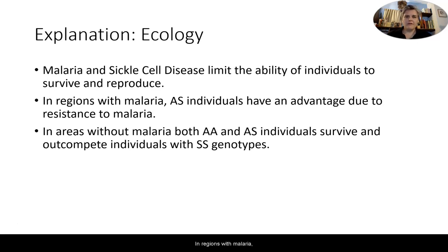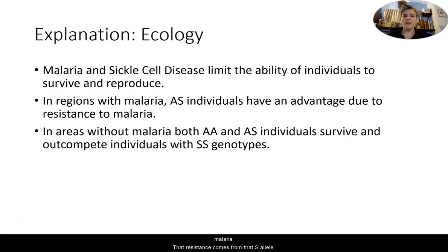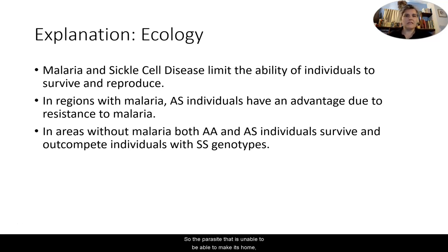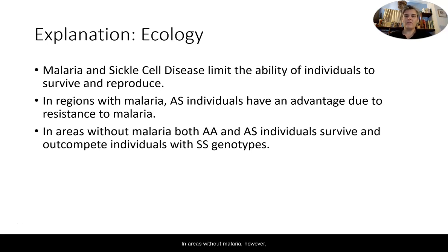In regions with malaria, individuals who have the AS genotype have an advantage due to their resistance to malaria. That resistance comes from the S allele. The reason is that the parasite needs to be able to rearrange the material inside the blood cell, and the S allele — that particular gene — makes it impossible for the parasite to do that. So the parasite is unable to make its home, so to speak. That is what provides the advantage of the AS genotype.